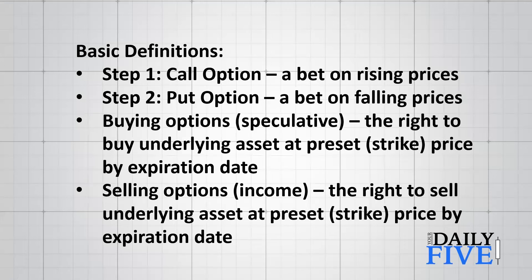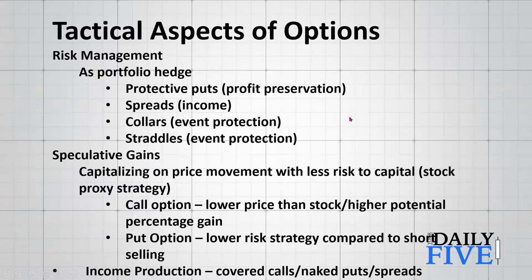Here are some basic definitions in case you're not an experienced option trader. A call option is a bet on rising prices, for all intents and purposes. A put option is a bet on falling prices. When you buy options, it's a speculative trade — it gives you the right to buy an underlying asset at a preset or strike price by the expiration date. When you sell options, you're trying to generate income; you have the right to sell the underlying asset at a preset or strike price by the expiration date.